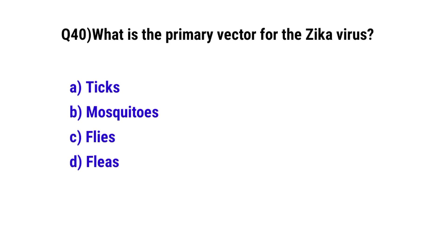Question number 40. What is the primary vector for the Zika virus? The correct option is B. Mosquitoes.